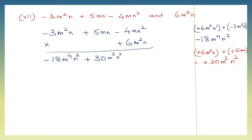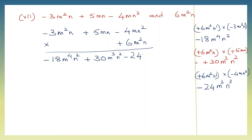Now let's take the last part and multiply: plus 6m squared n into minus 4mn squared. First the signs: plus into minus is minus. 6 into 4 is 24. m squared and m makes it m to the power of 3. And we have 1n here and 2n's on the other side: n to the power of 3. So let's write that down: minus 24m to the power of 3 and n to the power of 3. So here we've got our answer.